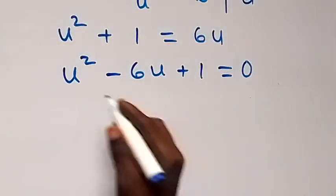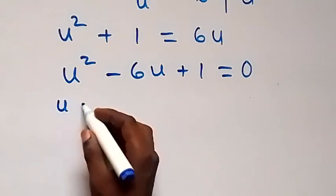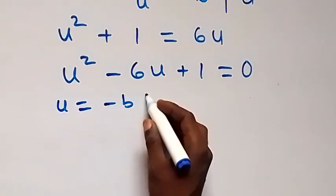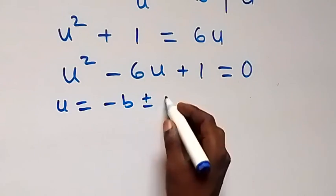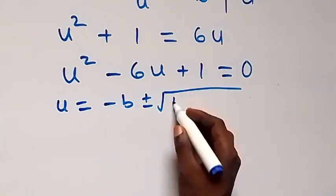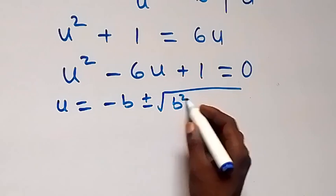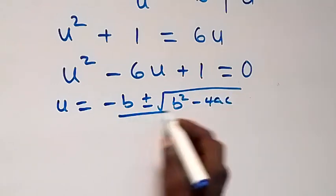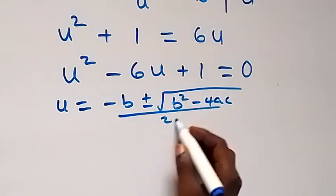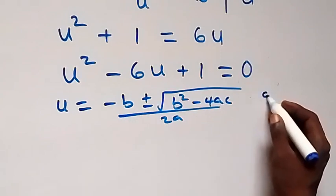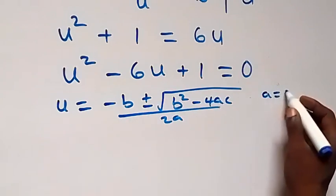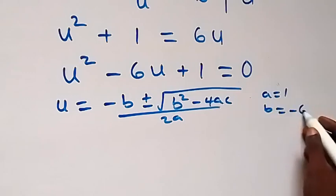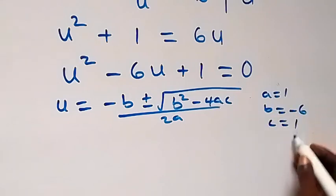We can solve this quadratic equation using the formula: u equals minus b plus or minus square root of b squared minus 4ac, over 2a. Here a is 1, b is minus 6, and c is 1.